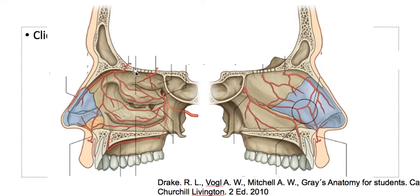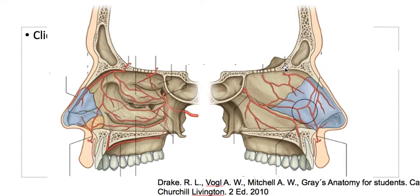They both perforate the cribriform plate. The anterior ethmoidal artery accompanies the anterior ethmoidal nerve and passes first to irrigate the frontal sinus and ethmoidal sinus, then enters the cranial cavity. The posterior ethmoidal artery first irrigates the ethmoidal and sphenoidal sinus.